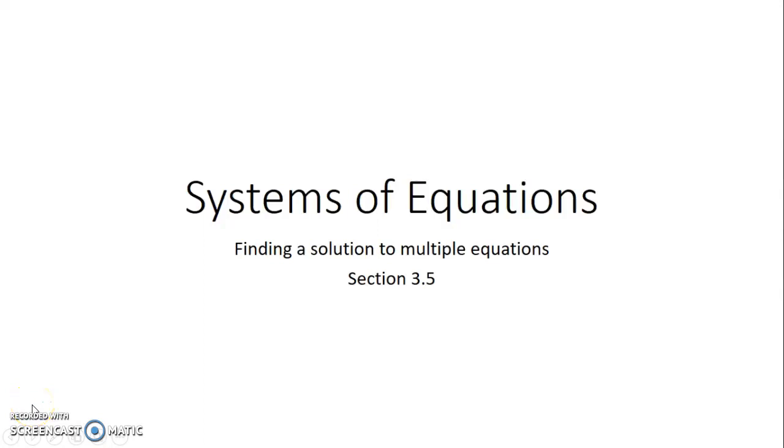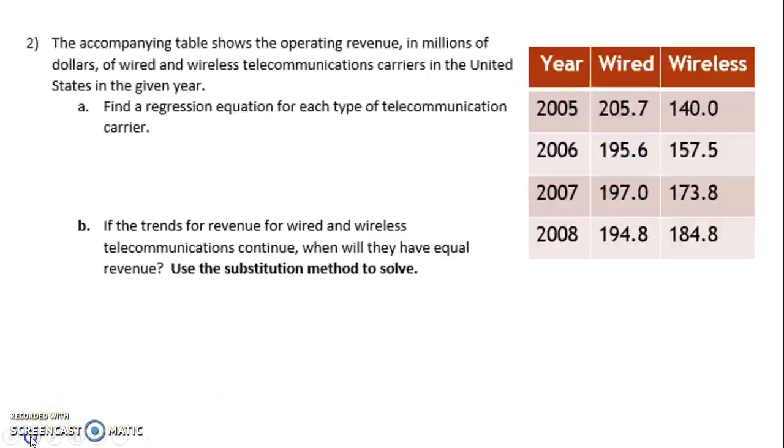We are studying systems of equations. This is when we try to find a solution to multiple equations, and this information is from section 3.5 of our e-text. Let's take a look at an example. We have a table that shows the operating revenue in millions of dollars of wired and wireless telecommunication carriers in the United States per given year. We are tasked in Part A with finding a regression equation for each type of telecommunication carrier.